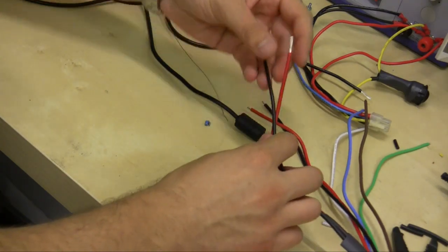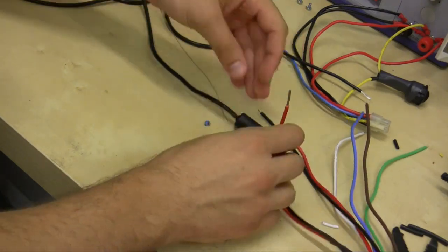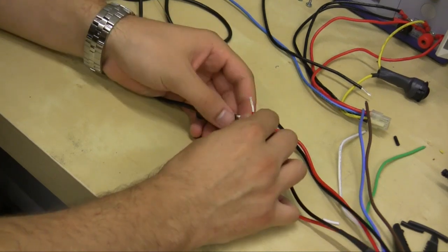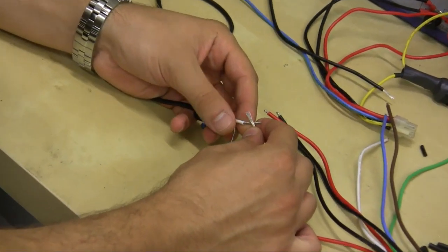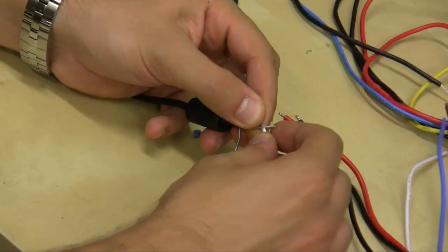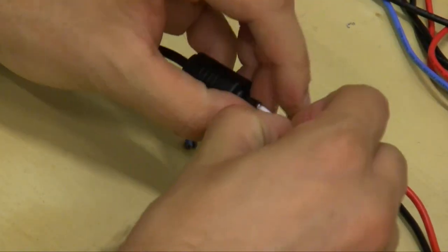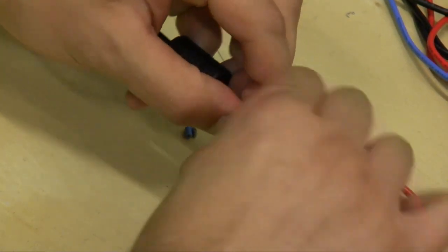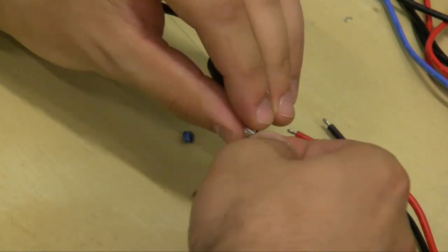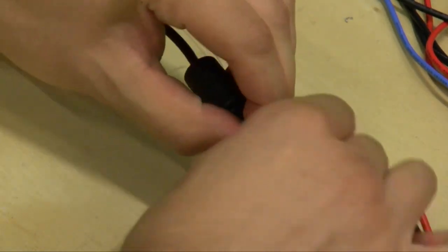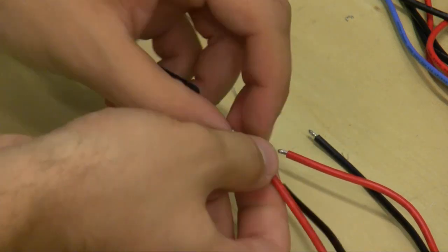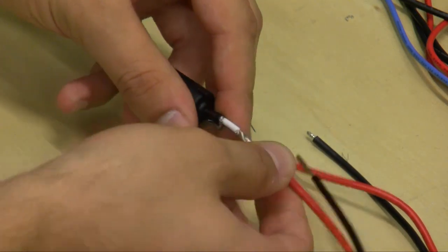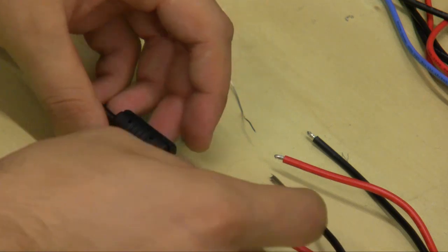So the first thing I'm going to do is I'm going to solder the positive wire together. So what I'm going to do is I'm going to kind of criss cross these and I'm going to wind them around each other so they just kind of stay together during the solder process. I kind of want to make sure this is kind of like a straight piece.